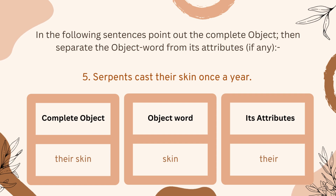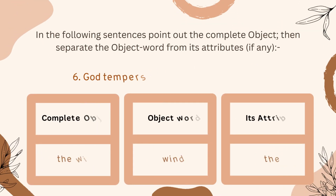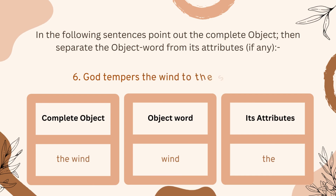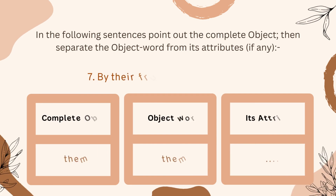Number six: 'God tempers the wind to the shorn lamb.' 'The wind' is the complete object in this example. 'Wind' is the object word, and the article 'the' is used as an attribute for the word 'wind.'